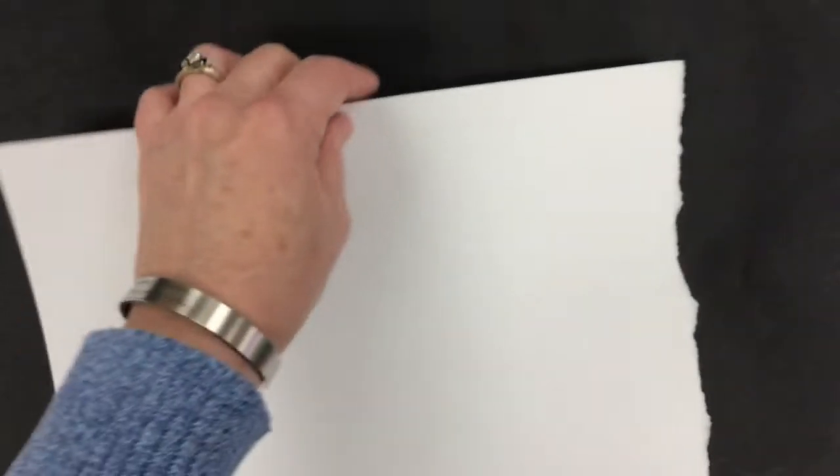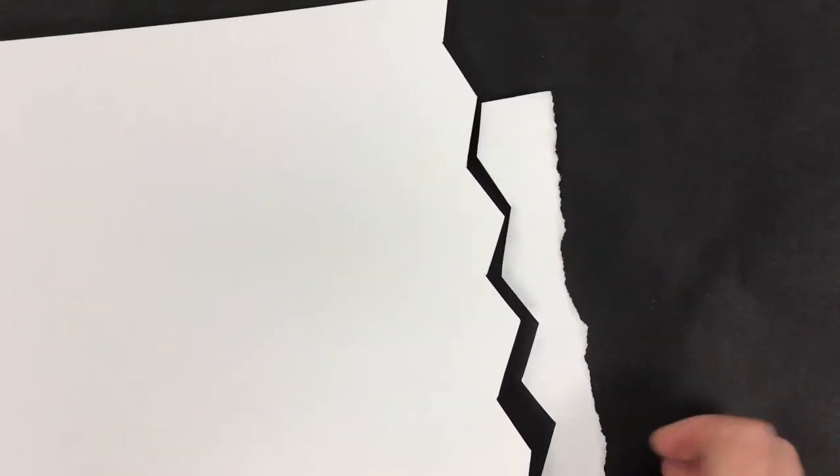Now we're going to cut paper. I decided to cut mine in a zigzag line—you can see I'm going to the left, to the right, to the left, to the right. I'm going to do that all the way until the end, and then I'm going to do it one more time so that I have a cut edge on both sides of the paper.